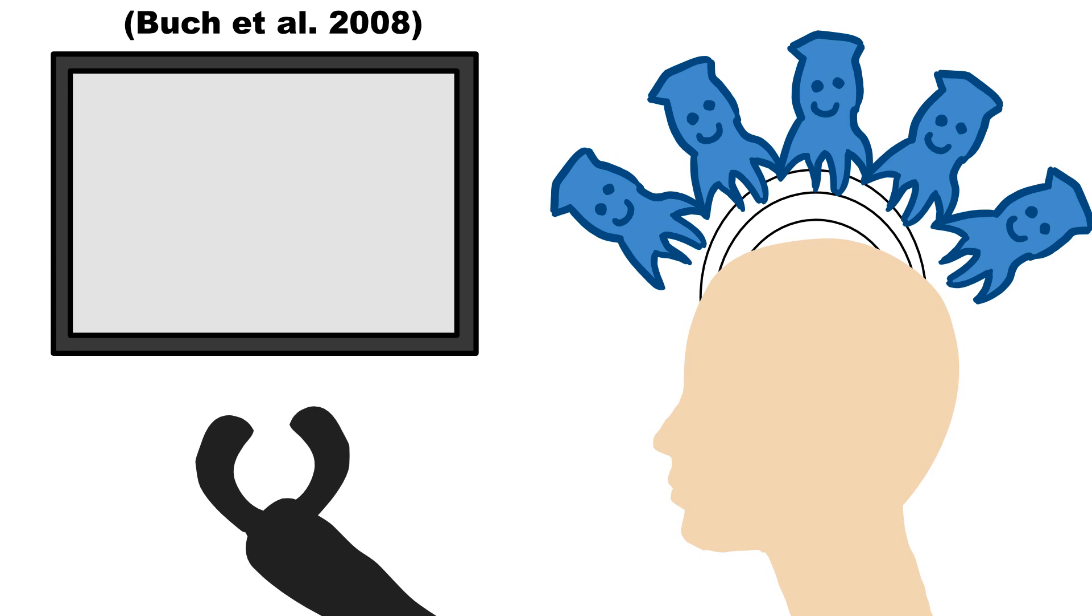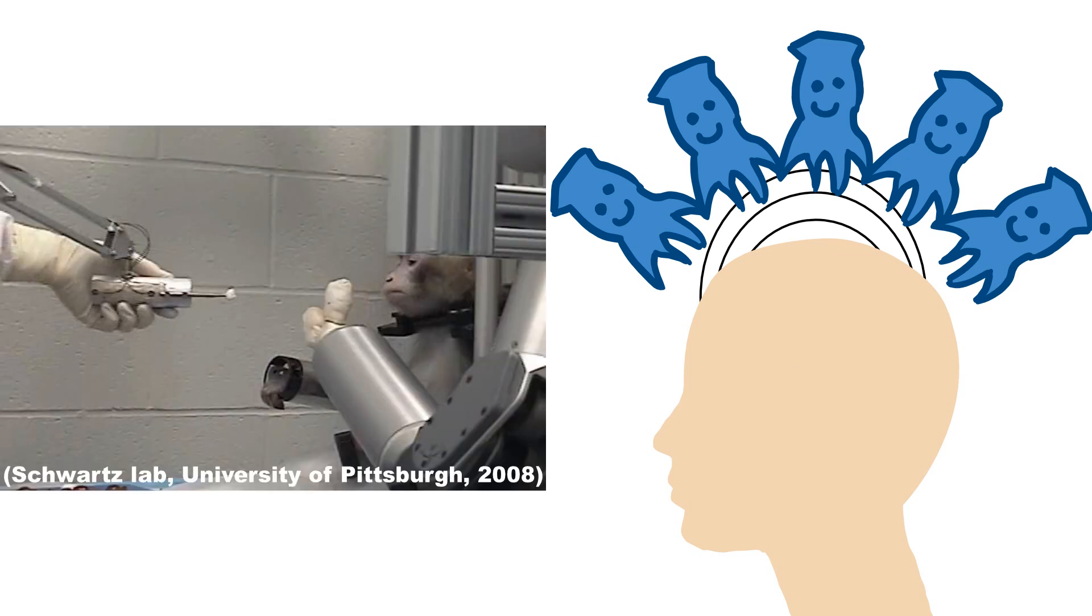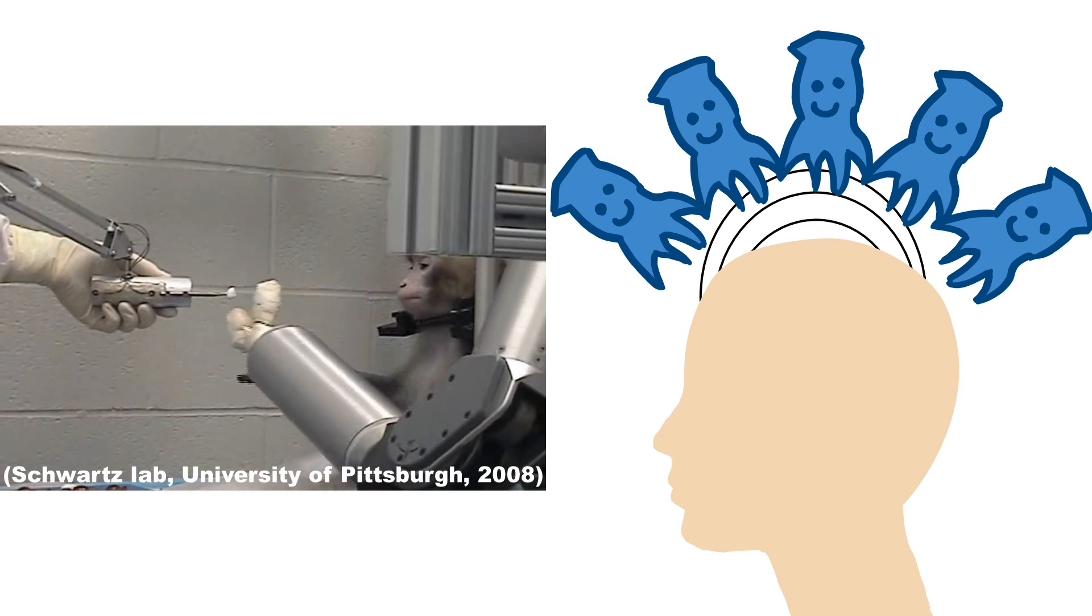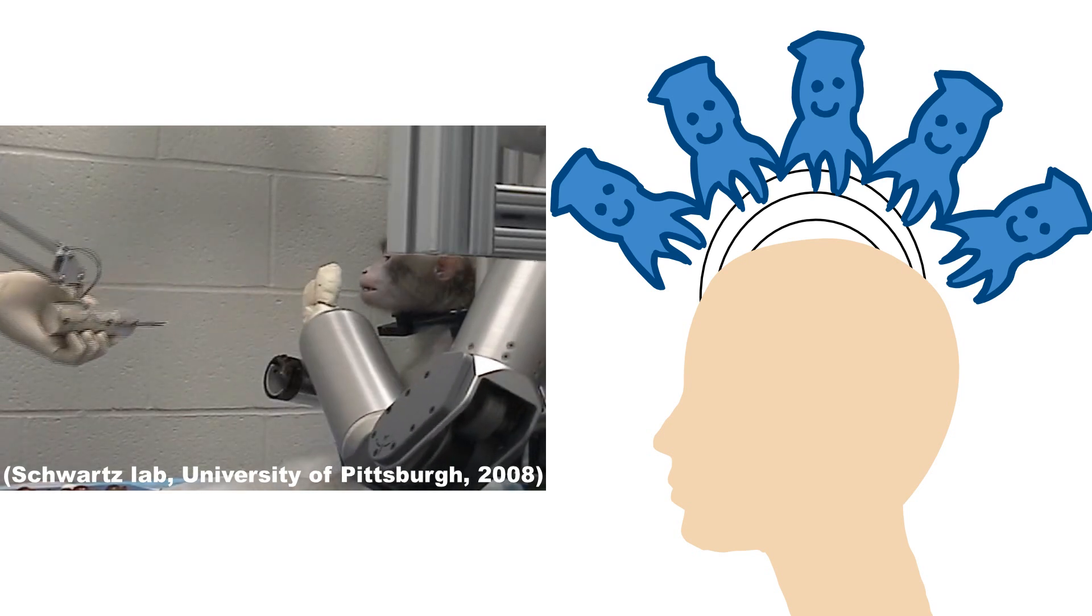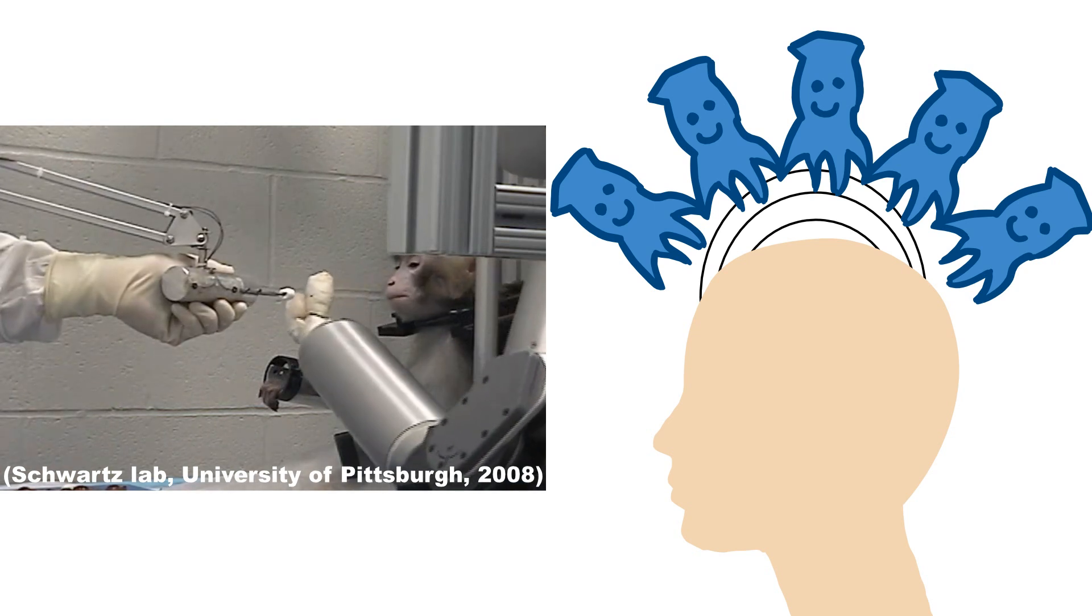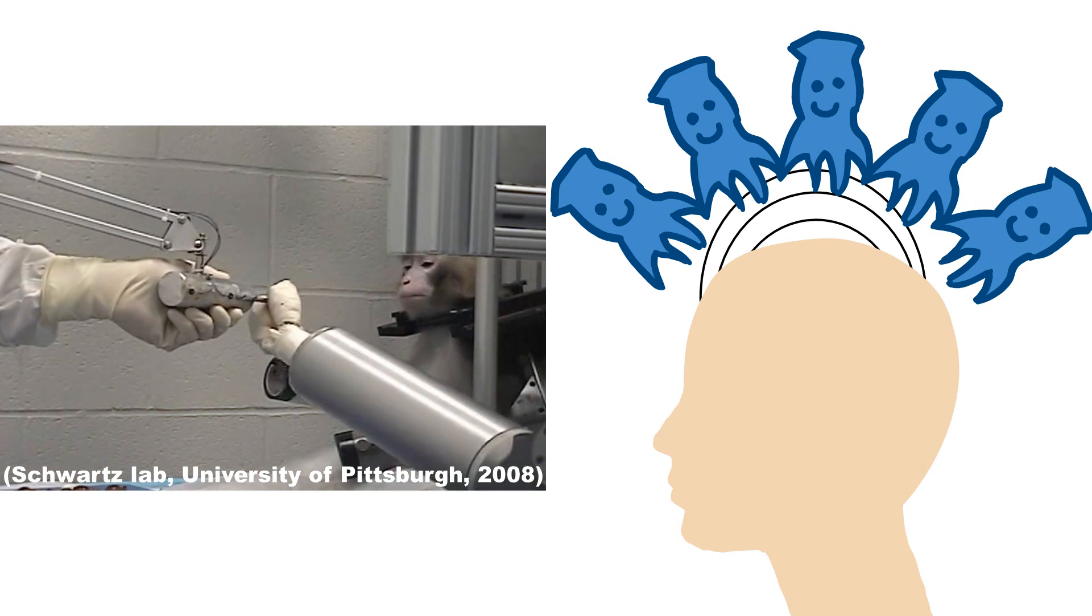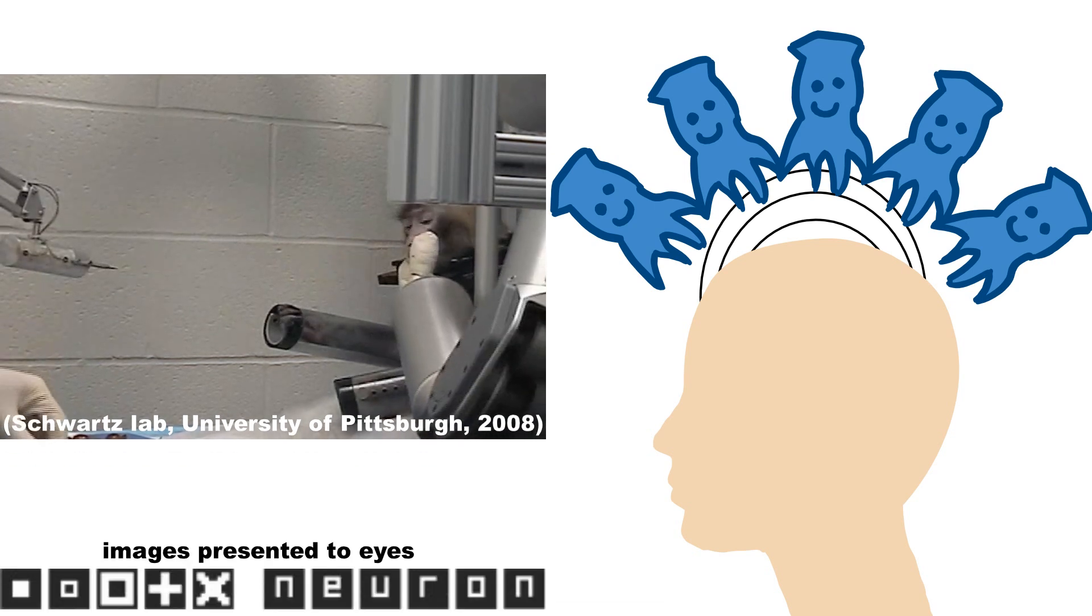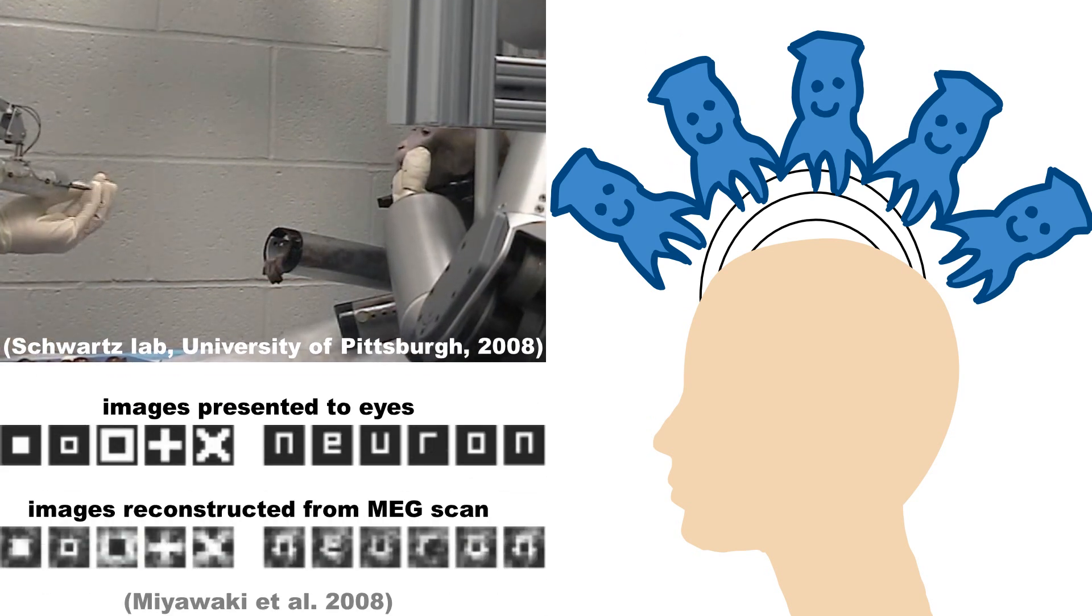When the computer was connected to a mechanical hand, the stroke victim could open and close the hand with their brain activity. Similar stuff has been done with monkeys controlling robotic arms. With this kind of technology, we can potentially restore movement to people who can't move, and communication to people who can't speak. We can even work out what people are seeing and thinking by measuring their brain activity.